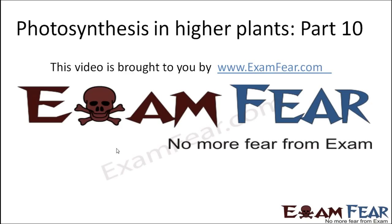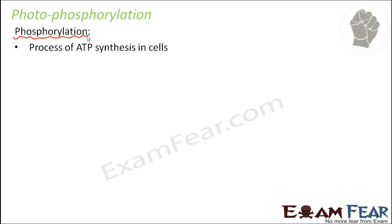Hello friends, this video on photosynthesis in higher plants part 10 is brought to you by examfear.com — no more fear from exam. Now we will talk about the process of photophosphorylation. This is the process of ATP synthesis, where ATP is getting produced. First let us try to understand the meaning of the term phosphorylation — it is the process of ATP synthesis in cells.